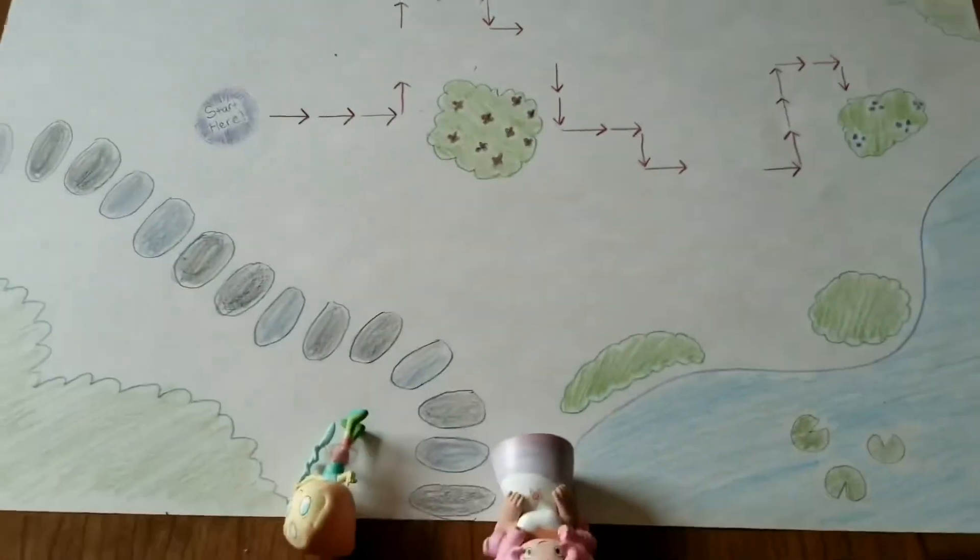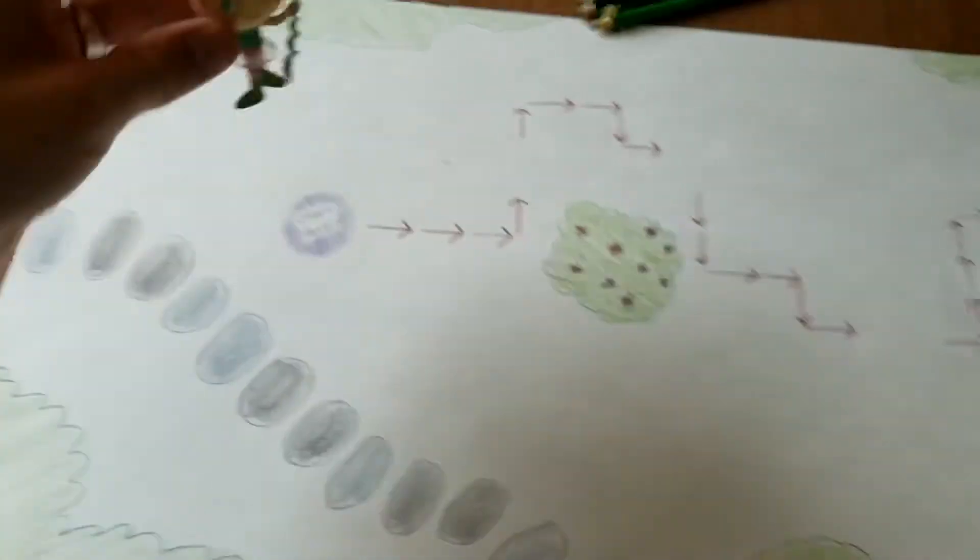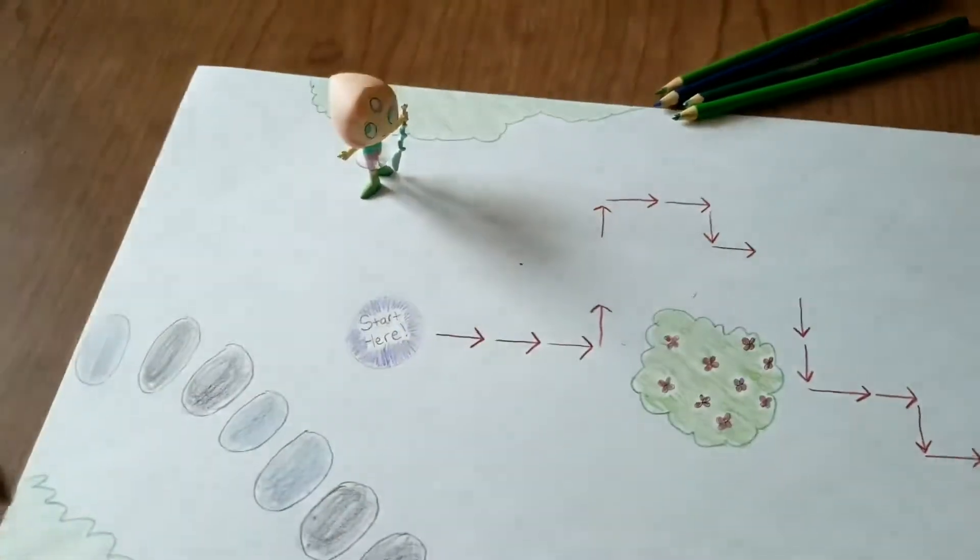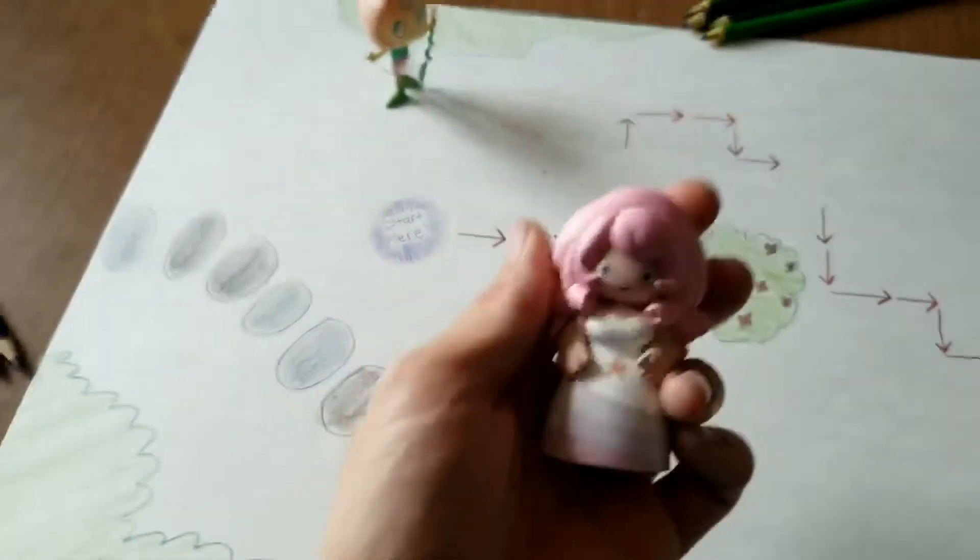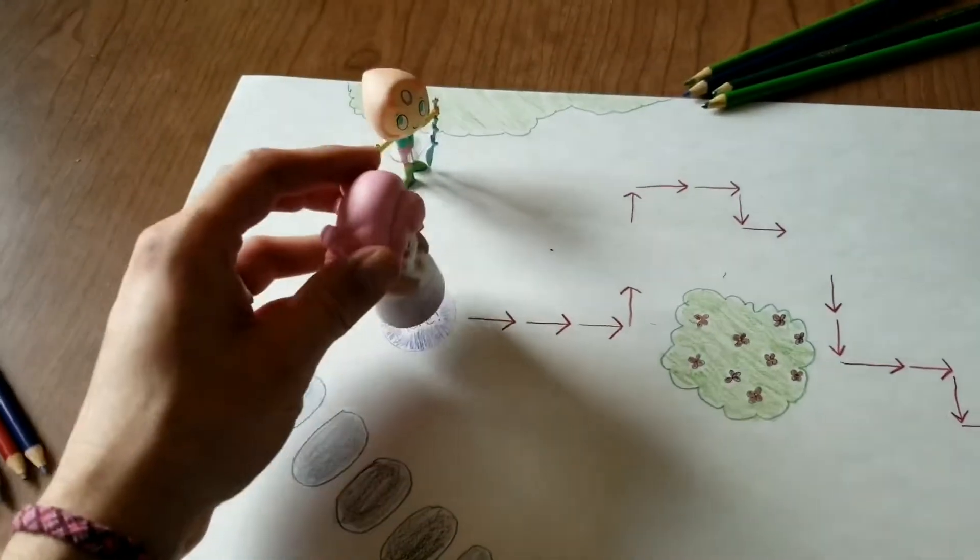All right, so Pearl is going to be our treasure guide. She will stand over here, and Rose will be our treasure hunter. Rose will blindfold herself and then place herself at the start point.